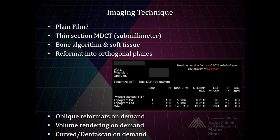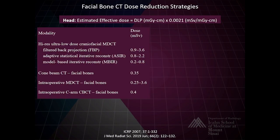At our hospital the actual measured dose is around 0.38 millisieverts — fairly low. Techs should be able to do oblique reformats on demand and volume rendering. Regarding dose reduction, conventional filtered back projection can have quite a variable range up to 3.6 millisieverts, which is archaic and high. If you have ASIR or model-based iterative reconstruction, you should exploit that to reduce dose while maintaining good diagnostic yield.